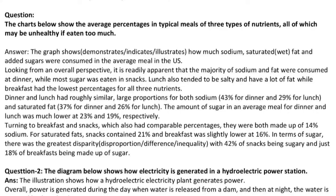The charts below show the average percentages in typical meals of three types of nutrients, all of which may be unhealthy if eaten too much. The graph illustrates how much sodium, saturated fat and added sugars were consumed in the average meal in the US. Looking from an overall perspective, it is readily apparent that the majority of sodium and fat were consumed at dinner, while most sugar was eaten in snacks. Lunch also tended to be salty and have a lot of fat, while breakfast had the lowest percentages for all three nutrients.